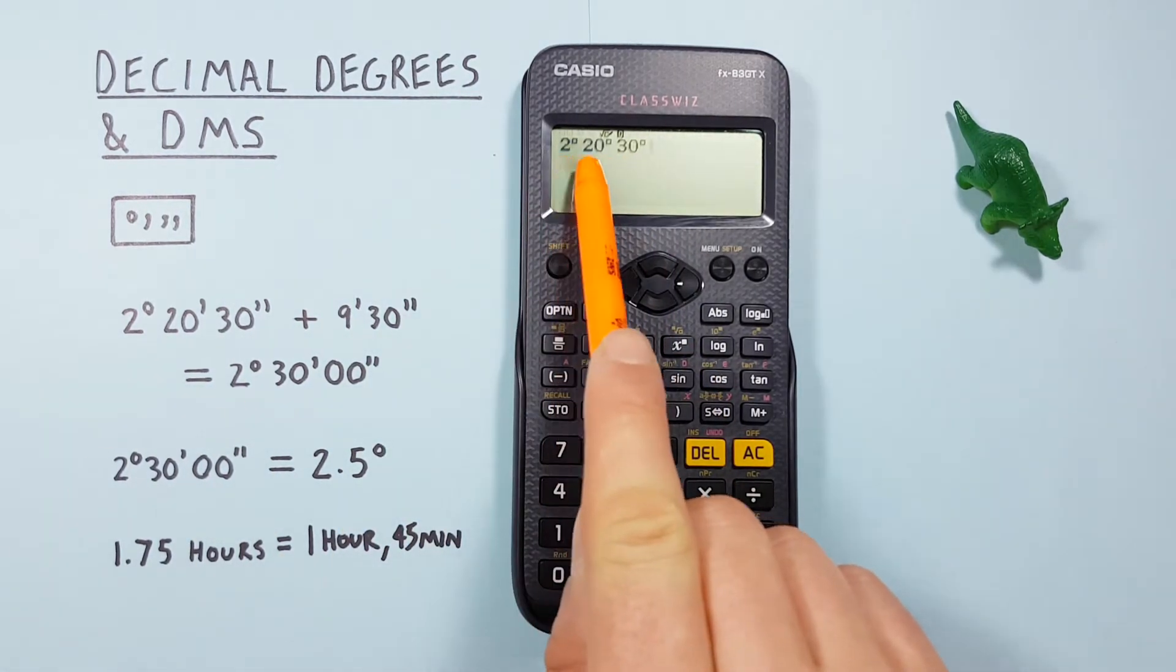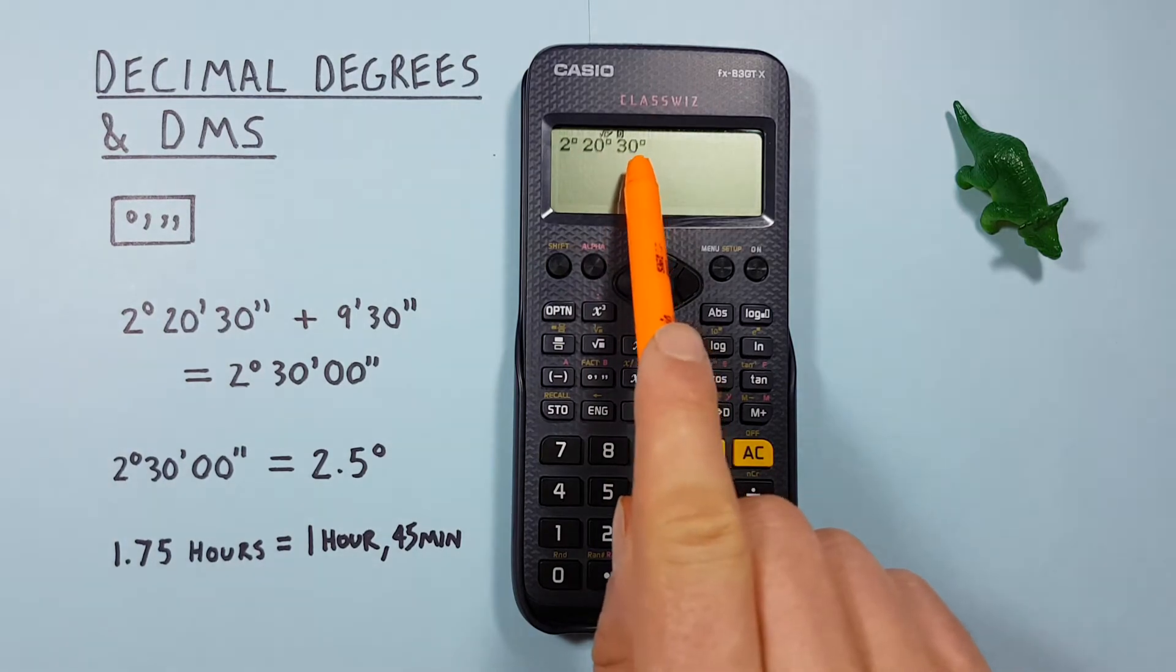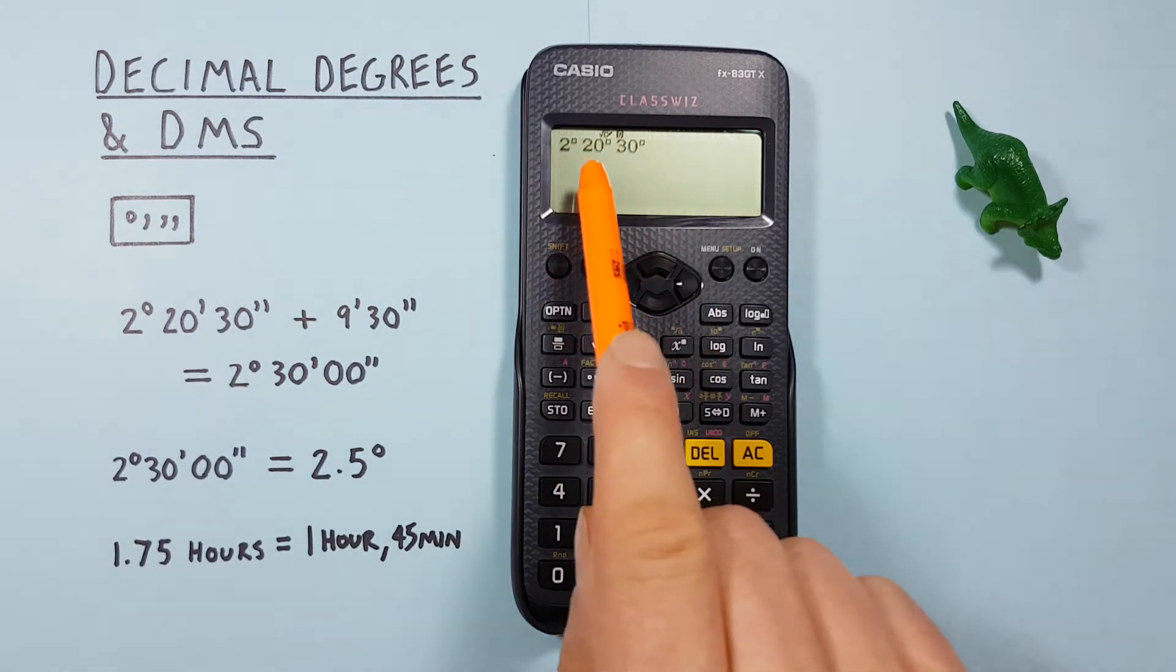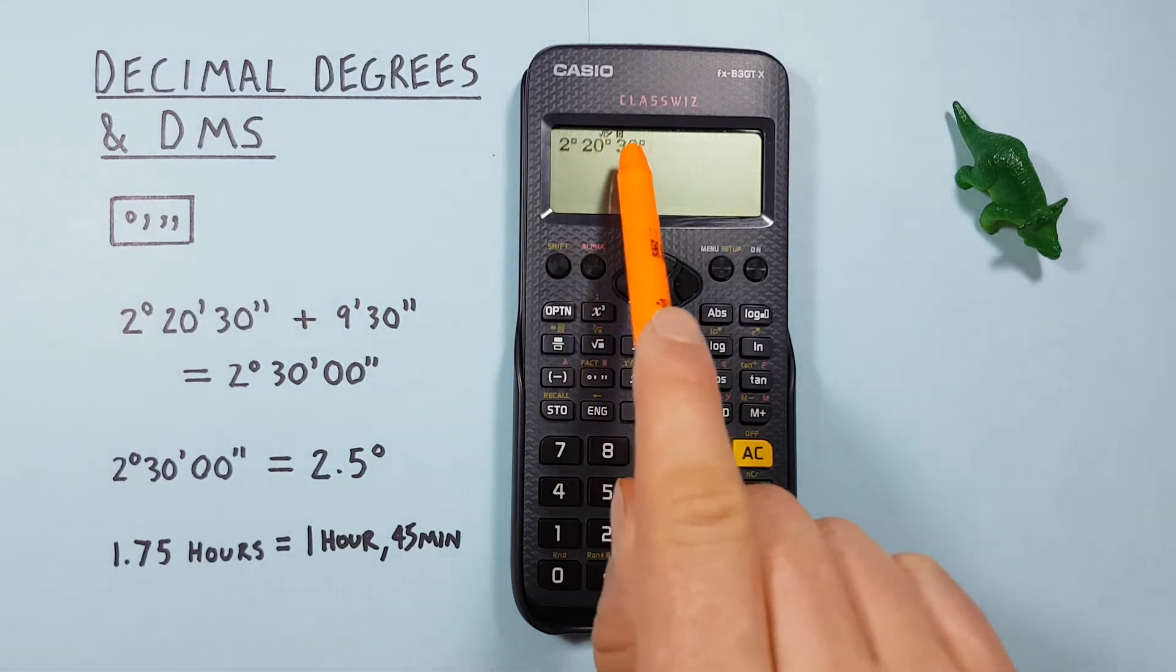This shows 2 degrees 20 minutes 30 seconds. Unfortunately this calculator just displays the minutes and seconds at this stage of the calculation with the same degree symbol.